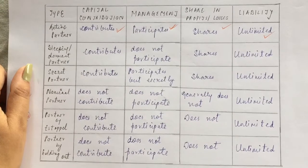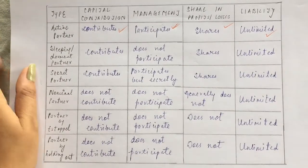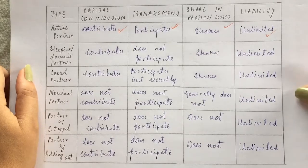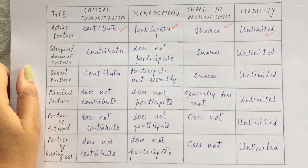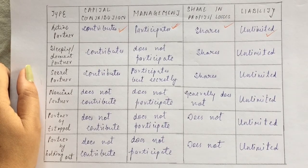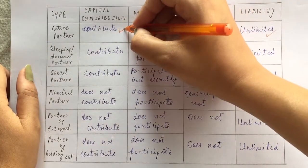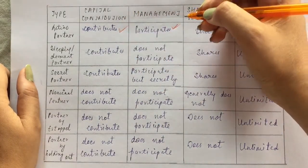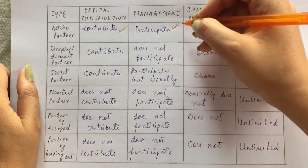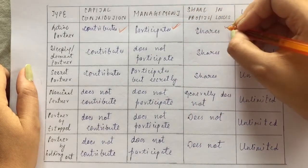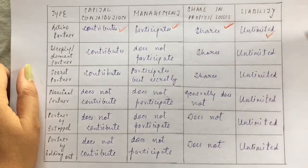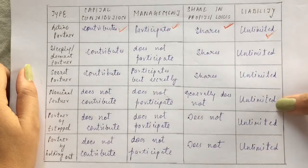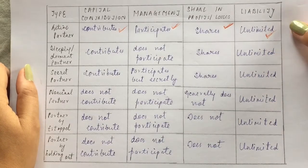The first type of partner is an active partner. As the name suggests, this is a partner who is very active in the entire business. He contributes capital — he puts money in the business. He participates in management and decision making. He shares profits and losses. His liability is unlimited, which is a common feature of any partnership firm.